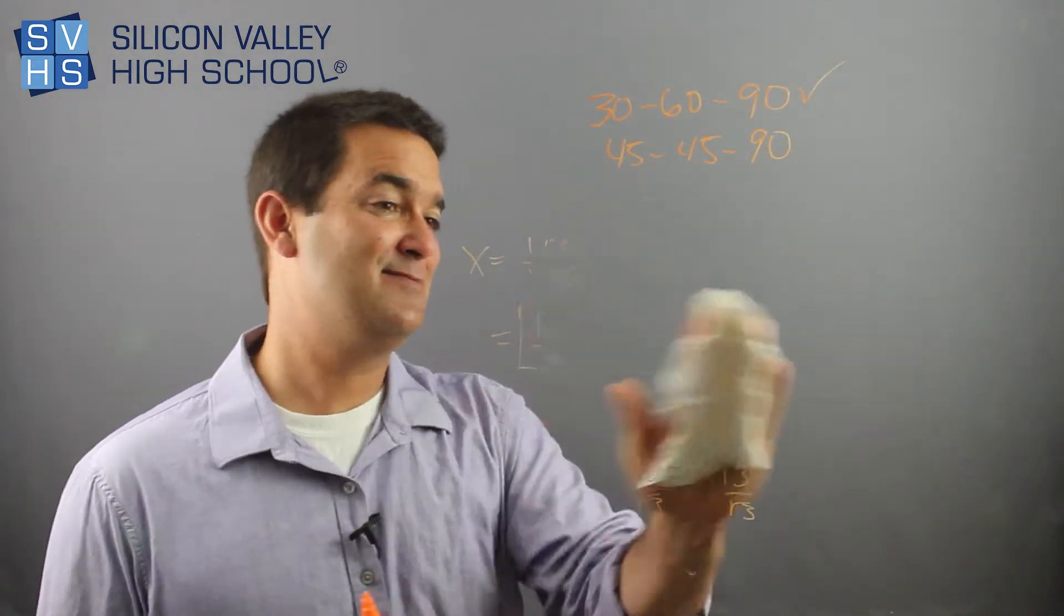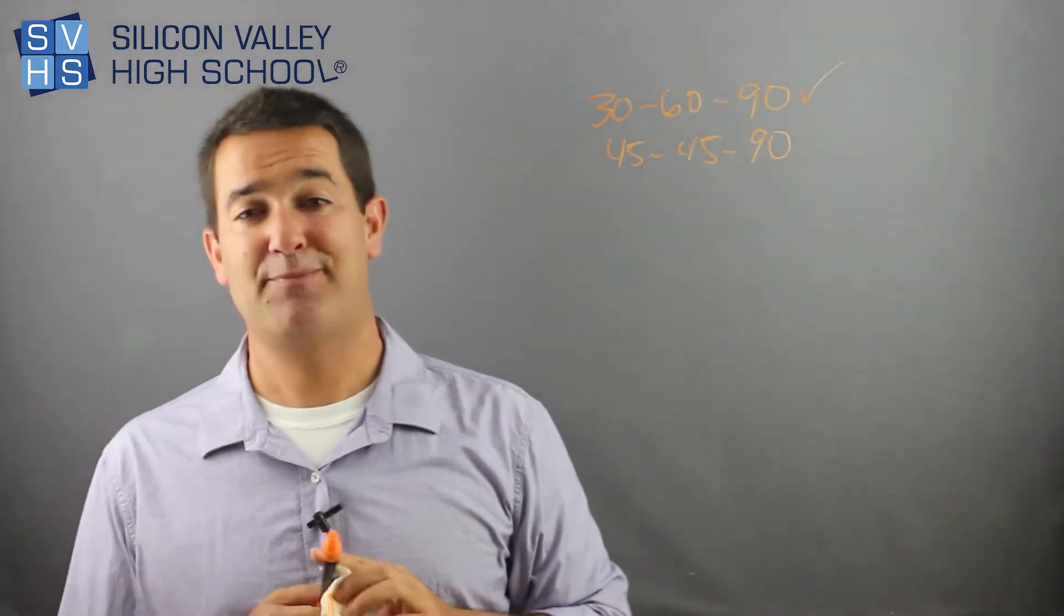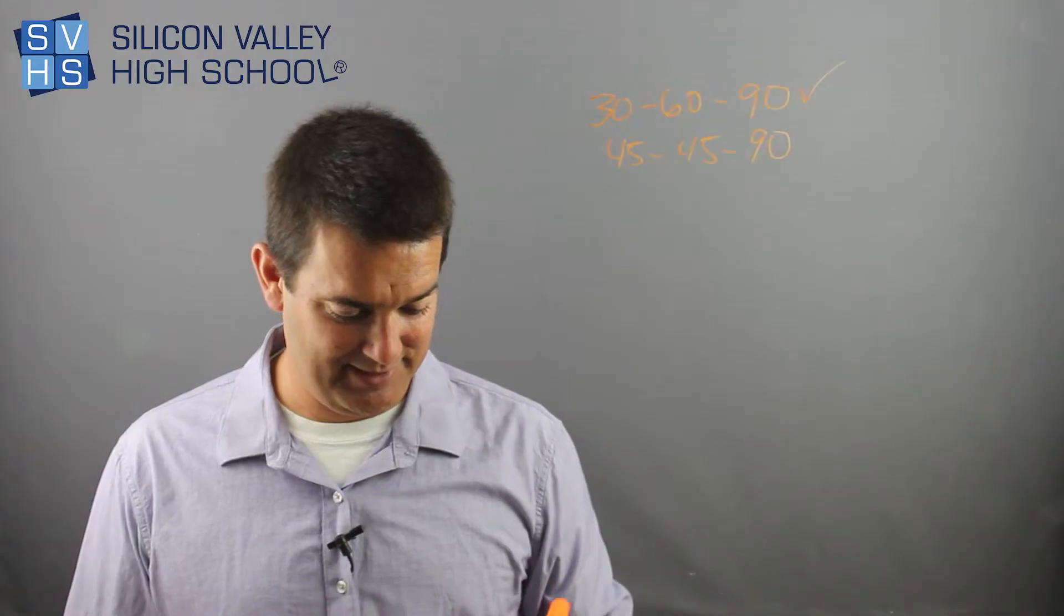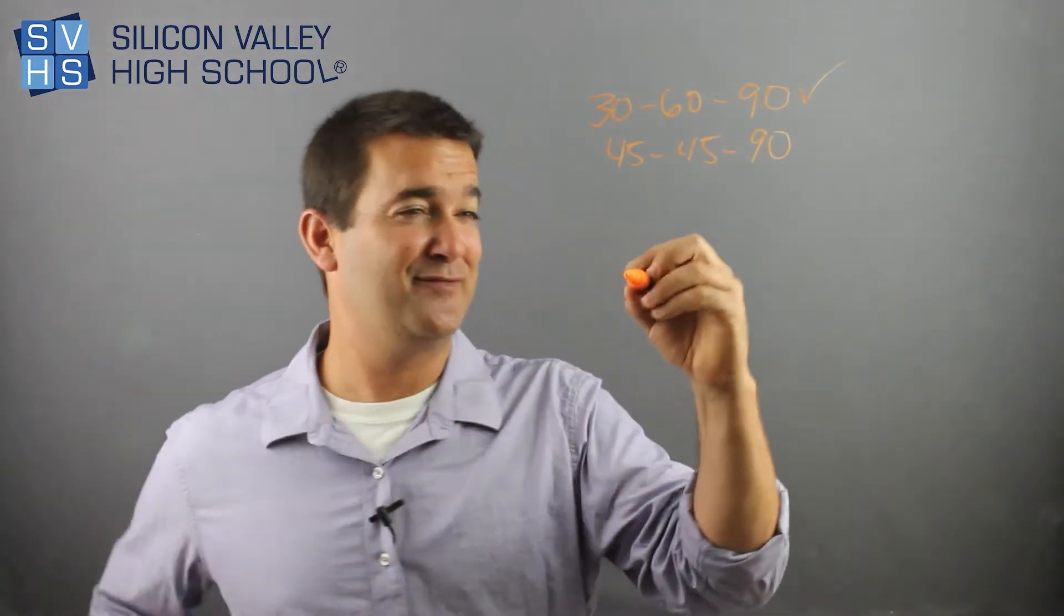All right, so that's 30-60-90. Pretty easy. Okay, 45-45. It's the same thing where there's like predetermined rules and relationships. So here's the rule or the relationship for 45-45-90.